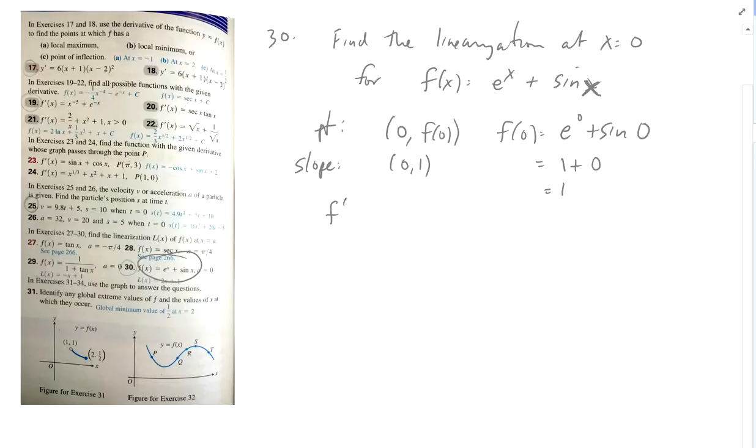And the slope is f'(x), the derivative: e to the x plus cosine of x. And at my point, e to the 0 plus cosine of 0 is, of course, 1 plus 1, which is 2.